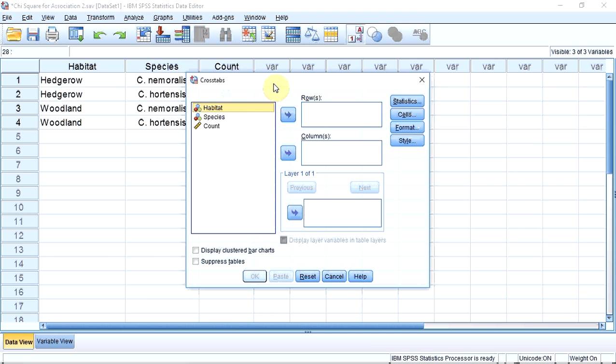A window opens. I now have to tell SPSS which variables we want to use. The row variable is our habitat, which is already selected, so I am going to put it in the row box by pressing the arrow.